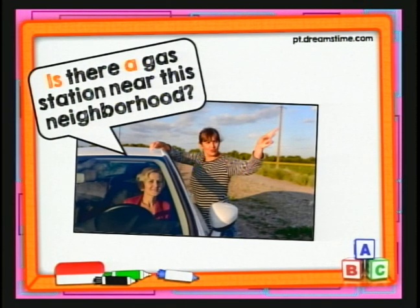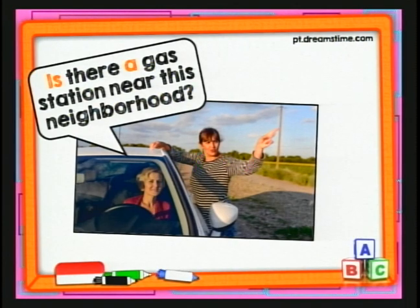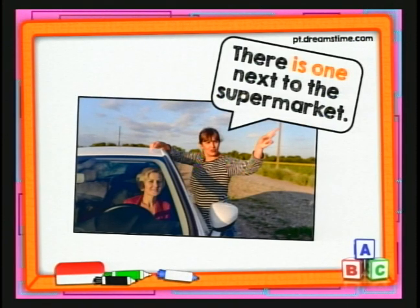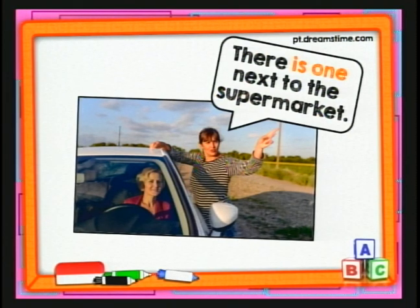Volvemos a un ejemplo en singular. 'Is there a gas station near this neighborhood?' — la señora está buscando una gasolinera y le pregunta: ¿hay una gasolinera cerca de este vecindario? Observen que la pregunta está en singular, muy importante que noten eso. Y se responde: 'Yes, there is one next to the supermarket.' Sí, hay una — refiriéndose a la gasolinera — cerca del supermercado. Is there a gas station near this neighborhood? Yes, there is one next to the supermarket.